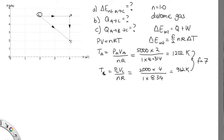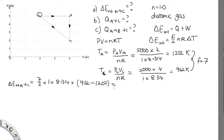The temperature at A is higher than the temperature at C, which tells us that the internal energy is actually decreasing. So the change in internal energy from A to C is equal to F over 2 — that's 7 over 2 — times n, which is 1, times R, 8.314, times the change in temperature, which is the final minus the initial temperature. Solving that on the calculator, we end up with minus 6,984 joules. Presenting this to two significant figures, we can write this as minus 7.0 kilojoules.